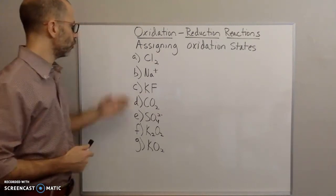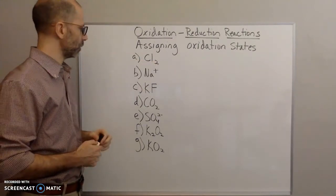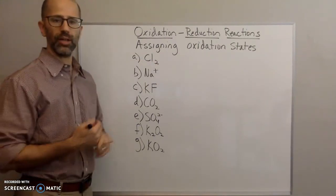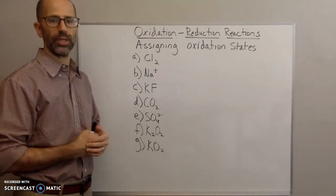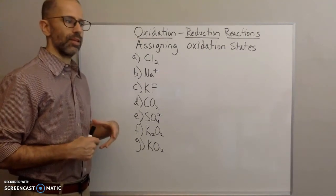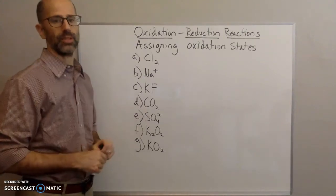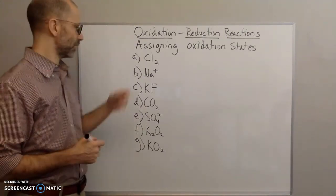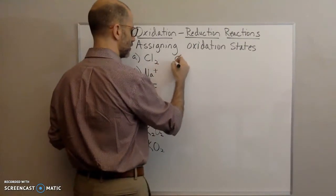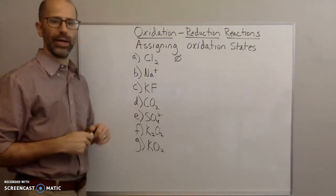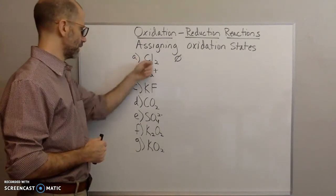The first one is chlorine gas, or the chlorine element. That is going to be associated with rule number one. Rule number one is that elements that are by themselves, or atoms in pure elements, have a zero oxidation state. So each of the chlorines in here are going to have an oxidation state of zero because it's a pure element.